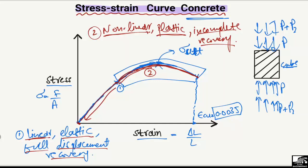So this is the general stress curve for the concrete, starting from zero and then following a linear elastic line, and then from point one at the end of point one it starts the second stage which is nonlinear plastic and incomplete recovery. We call such type of shape of the concrete stress-strain curve as parabolic.